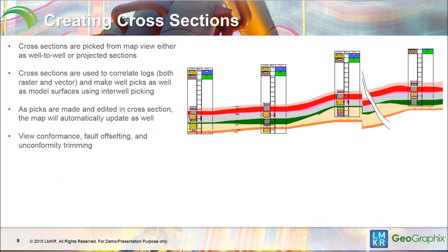Cross-sections are picked in Map View, much like in GeoAtlas and X Section. These are picked either as well-to-well cross-sections — connecting the dots — or projected cross-sections, which use a line of section and project wells to it. With the cross-section tool, you'll correlate logs, both raster and vector, make well-picks, and model surfaces using inter-well picking. As picks are made and edited, the map automatically updates to show the structure. You can view conformance, fault offsetting, and unconformity trimming in the cross-section module without Frame Builder.